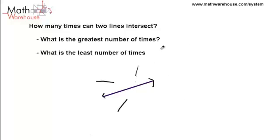The question is, can they ever intersect two times? And if you just think about it, the answer's no, right? We've got two lines, they're only going to hit once. So the greatest number of times is one.